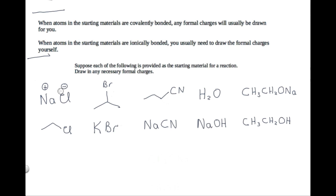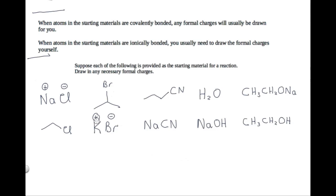That's the basic process: look for ionic bonds in the starting materials. When there are ionic bonds, draw in the formal charges. In covalent compounds, you usually don't need to draw in the formal charges. For the next exercise: this compound is completely covalently bonded — carbon, bromine, and the hidden hydrogens are all nonmetals, so no formal charges needed. On the other hand, potassium is a metal and bromine is a nonmetal, so here we have an ionic bond. Bromine gets the negative charge, potassium gets the positive charge.